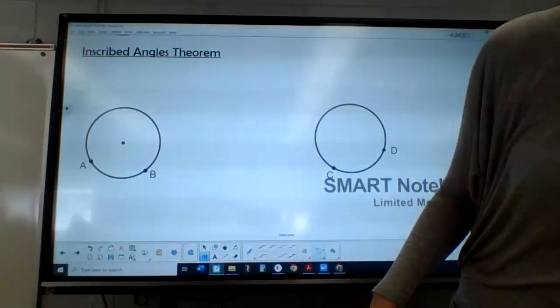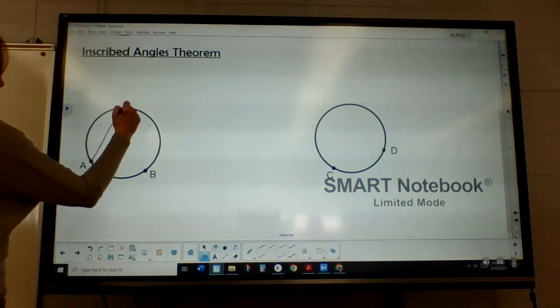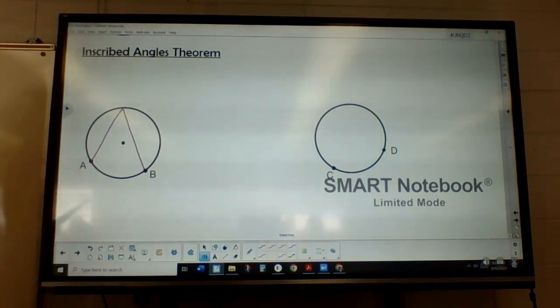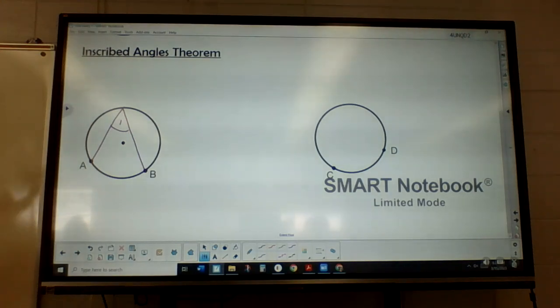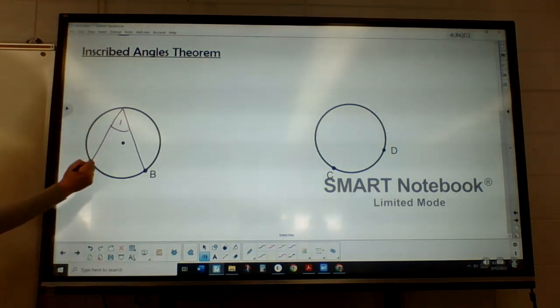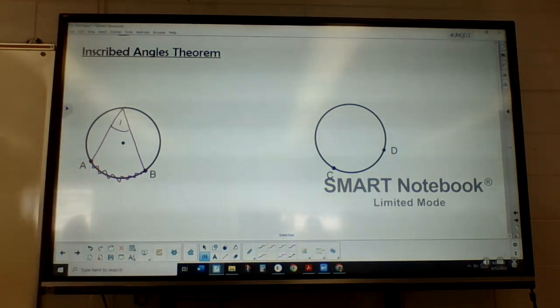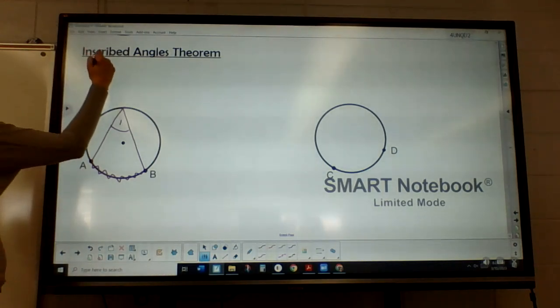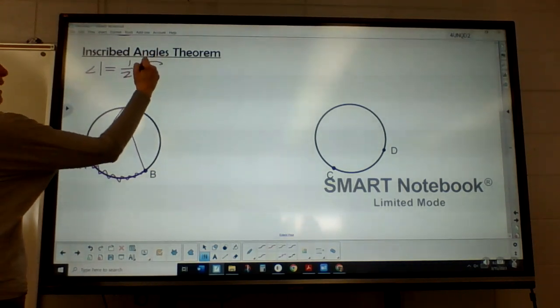So we have our inscribed angle here. So I'm going to call this angle one up here. Now, if this were a central angle, angle one would be the same as the arc AB. But it's not going to be the same. It's going to be half of that arc. So the measure of angle one is half of arc AB.